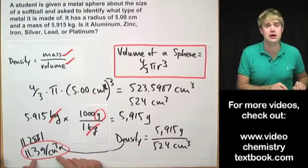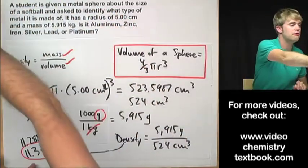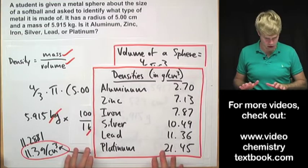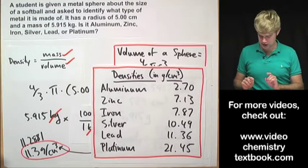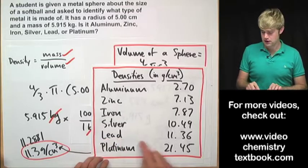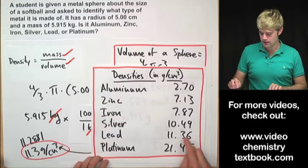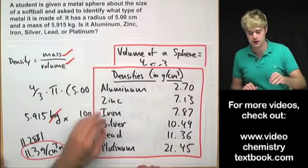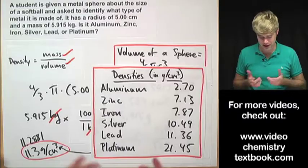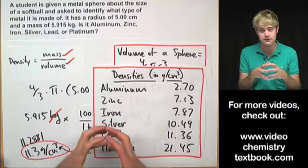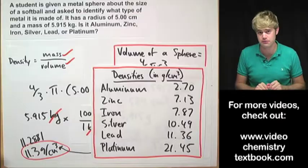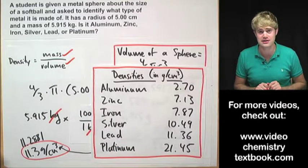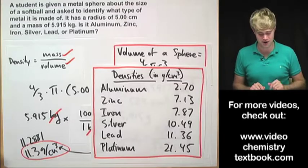Now I know what the density of the metal in the sphere is so now I can figure out what type of metal it is. We've got aluminum, zinc, iron, all these and it looks like it's pretty close to lead. Lead is 11.36 and here I've got 11.3. So that means that this sphere is made of lead and that's probably a good thing because if you had a sphere of platinum the size of a softball, I have a feeling that it would make it out of the class in somebody's backpack. That would be worth a ton of money.